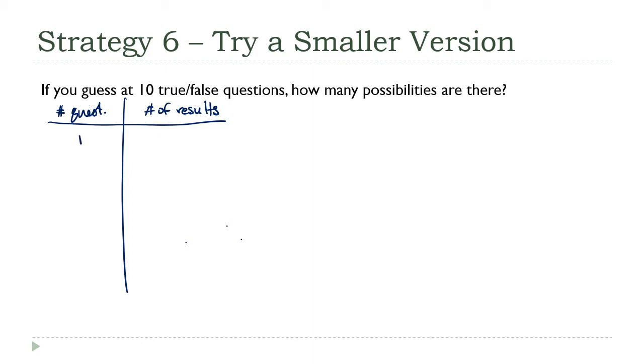Let's say there's just one question—easiest case. How many different possible ways are there to guess at this test? There's only two: I can answer true or I can answer false. Now let's say there's two questions. I could answer true on the first and true on the second, or true and false, or false and true, or false and false. That brings me up to four.